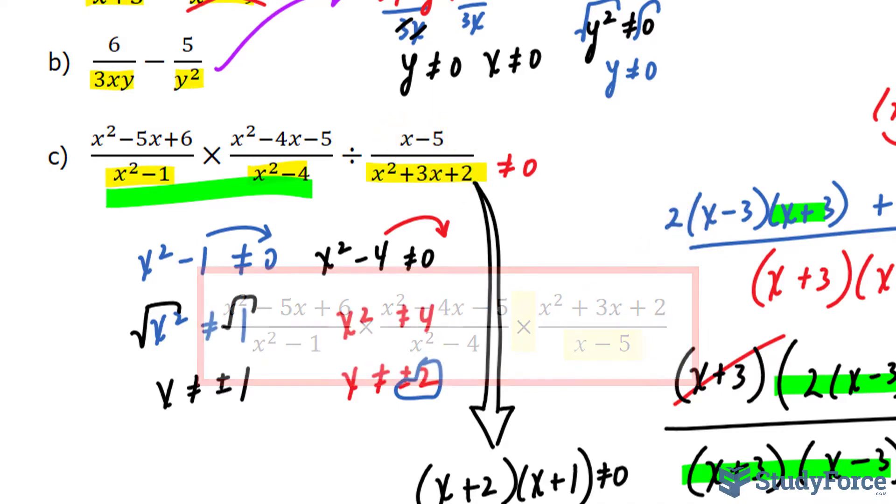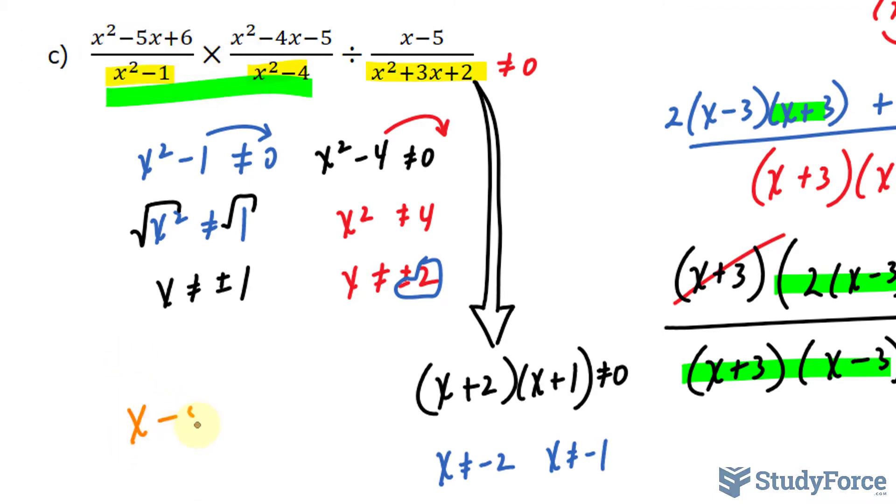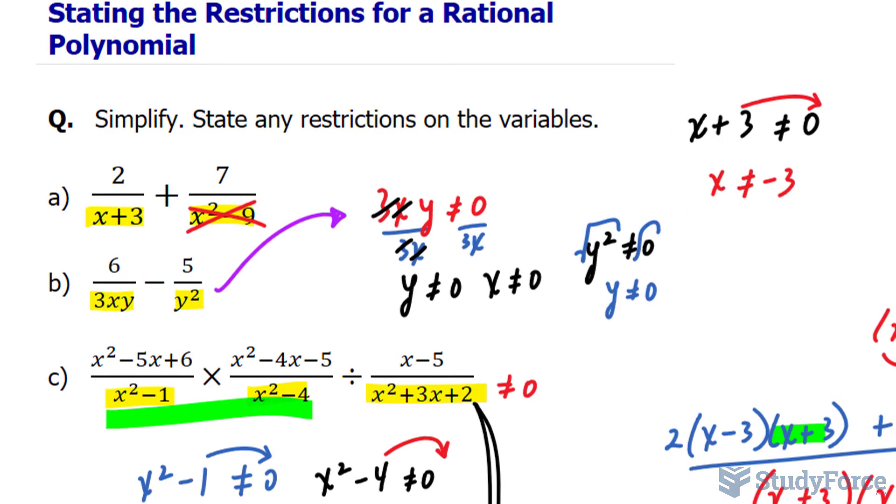Therefore, x minus 5 should also be considered. I won't be simplifying the whole thing because it will take a while. So I'll just show you that another restriction would be that this cannot equal 0. So bringing that negative 5 over, I get x cannot equal positive 5. And that is how you state the restrictions for a rational polynomial.